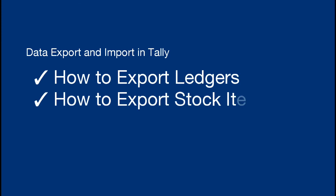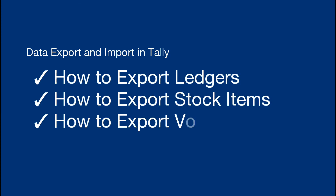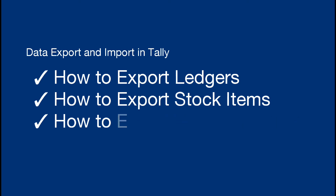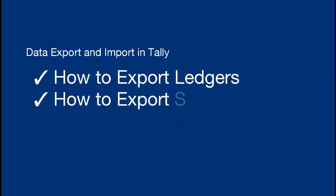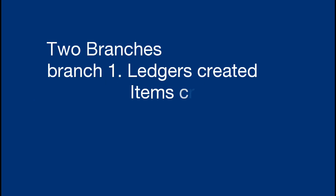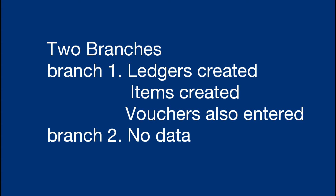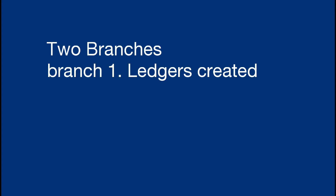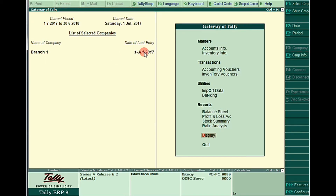In this video, I'm going to show you how to export data from one company to another company — from one Tally application to another Tally application with a different company name. In this system, I created two branches: Branch One and Branch Two. In Branch One I entered ledgers, items, and stock. In Branch Two there is no vouchers, no data, no stock.